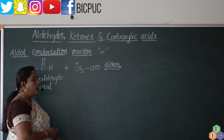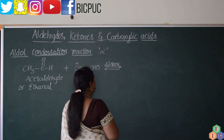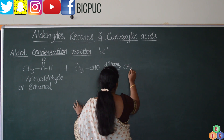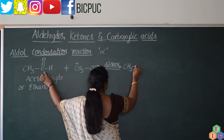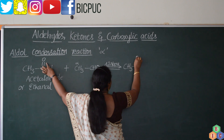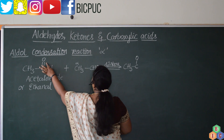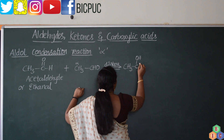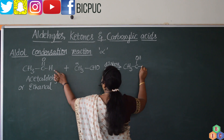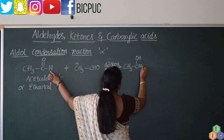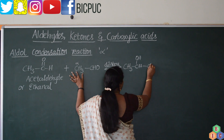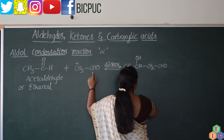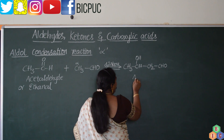It can undergo self-condensation when treated with dilute alkali, forming an aldol. Taking two molecules of CH3CHO: this carbon and oxygen are linked by a single bond; hydrogen from the neighboring acetaldehyde molecule attaches to this oxygen. One hydrogen has gone there, leaving CH2, and the CHO remains as it is. This will yield an aldol.